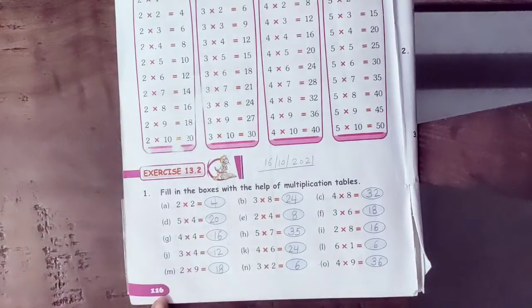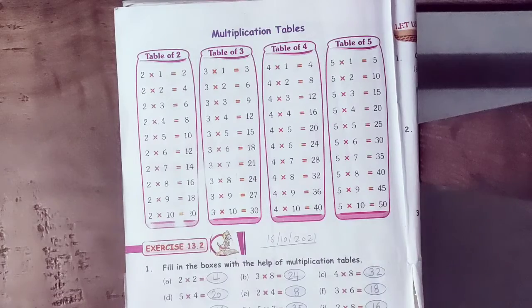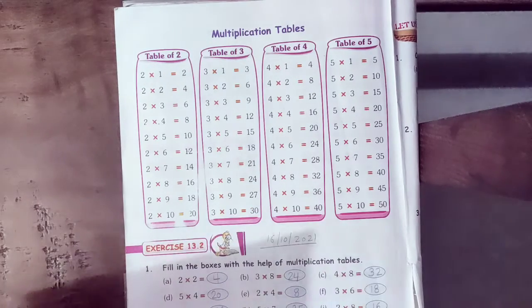In your Maths book page number 116 here are given the tables 2 to 5.